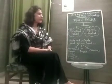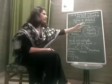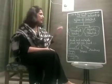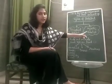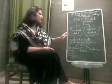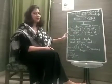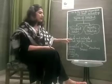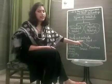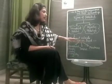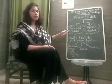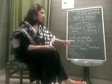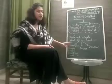Our next topic is types of habitats. There are mainly two types of habitats: terrestrial habitat and aquatic habitat. First we will discuss about terrestrial habitats. The habitats of plants and animals that live on land, or that are commonly found on land, are known as terrestrial habitats. Terrestrial habitats are again divided into three main types: grassland, desert, and mountain.